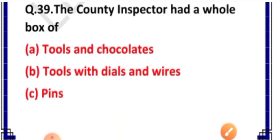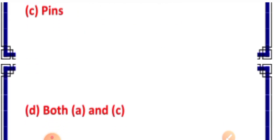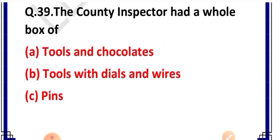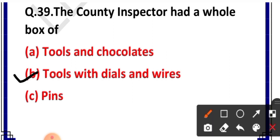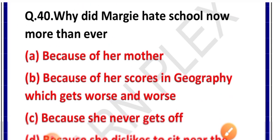Question number 39: The county inspector had a whole box of — options included both A and C — correct answer is option B: tools with dials and wires. County inspector ka poora box dials aur wires wale tools se bhara hua tha.